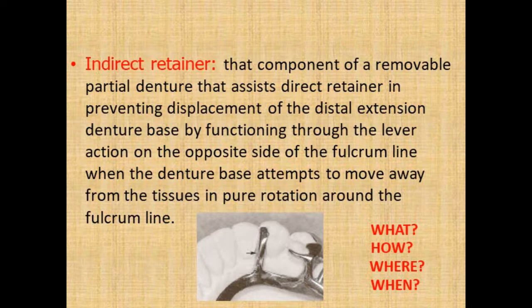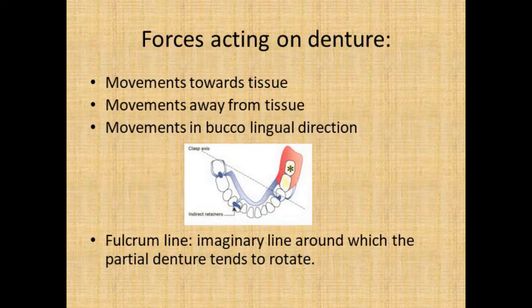To understand indirect retainer in more detail, you need to know the forces acting on the denture, what the fulcrum line is, and how the indirect retainer acts. Whenever a force acts on a denture it leads to movement — towards the tissue, away from the tissue, or in a buccolingual direction. When movement occurs, the denture tends to rotate around an axis called the fulcrum line — the imaginary line around which the partial denture tends to rotate, determined by joining the two posterior-most rests.